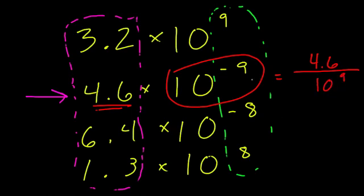Imagine that you're taking the number 4.6 and dividing it by 10 over and over again. What's going to happen to the value of a positive number when you do that? With positive numbers, the more you divide them, the more you break them into pieces and the smaller they get. Dividing by 10 over and over again will really make your number smaller and smaller on the number line.